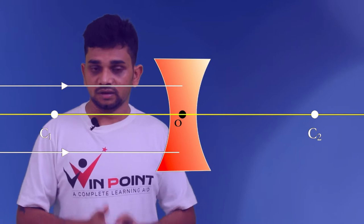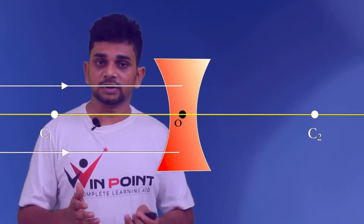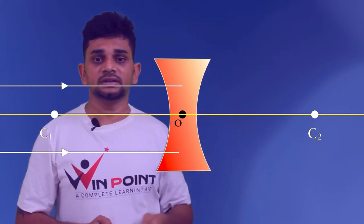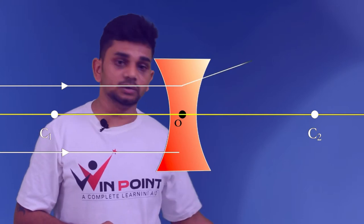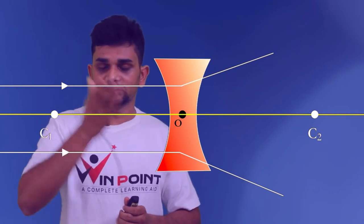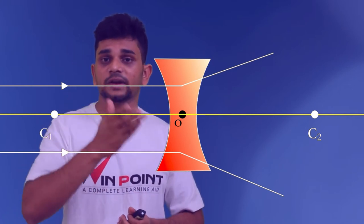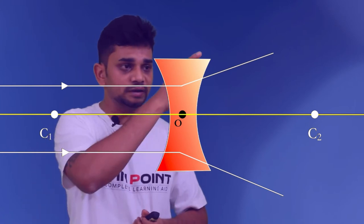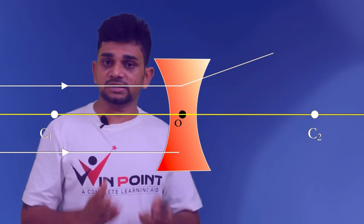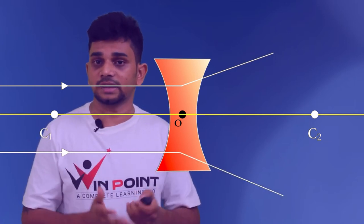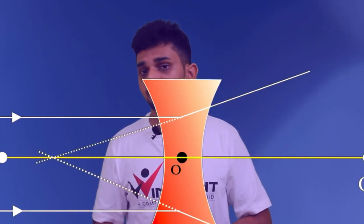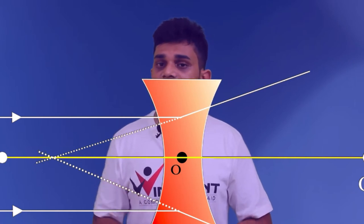A concave lens is a diverging lens. After refraction, all the light rays are going to diverge. Here you can see these light rays diverging. But when we extend these two refracted rays in the backward direction, we get a common point. This point is known as the principal focus of the concave lens, represented by the letter F.